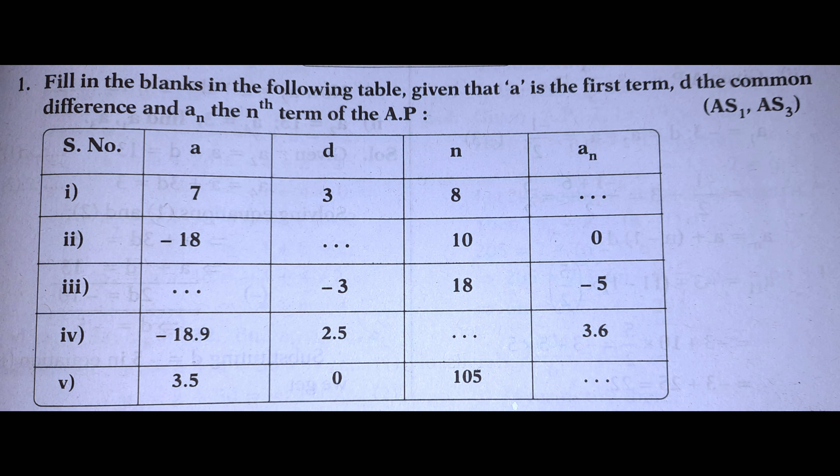Exercise number 6.2, first problem: fill in the blanks in the following table given that A is the first term, D is the common difference, and AN is the nth term of the AP. They have given 4 values: A is the first term, D is the common difference, N is the number of terms, and AN is the nth term. There are 5 bits to solve.